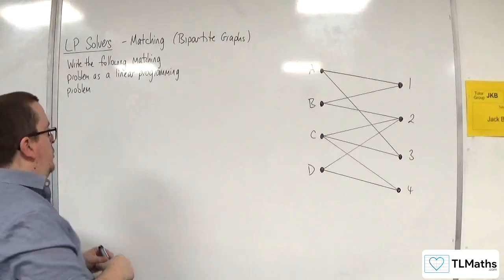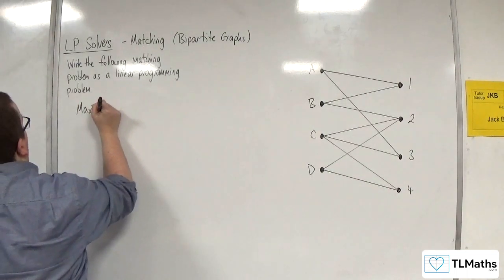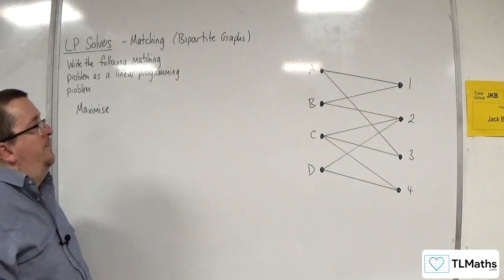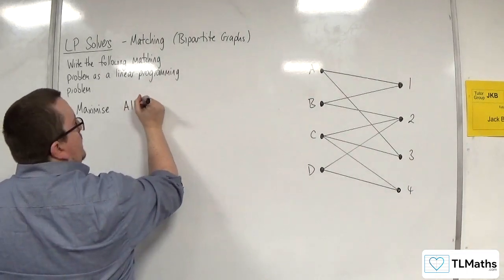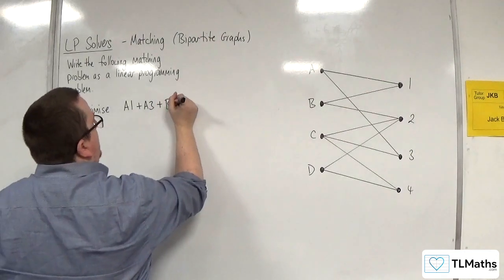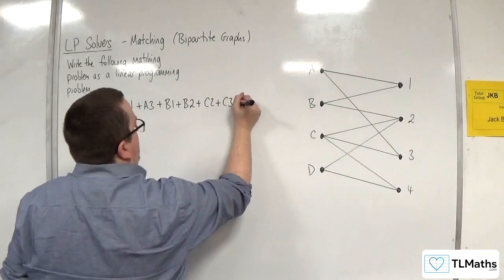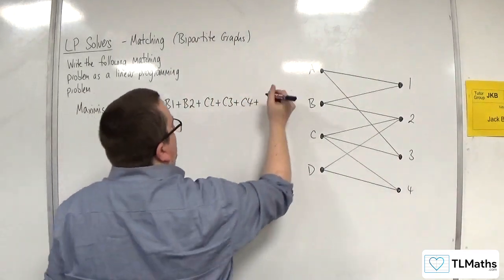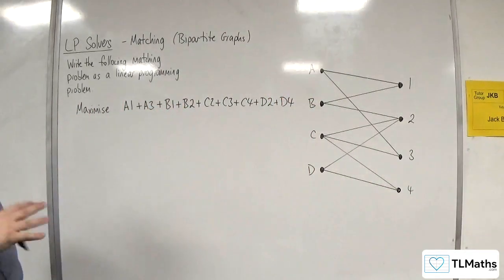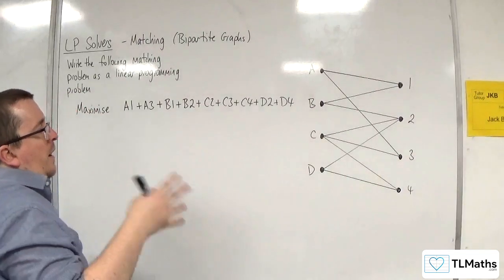Okay, so essentially what I want to do is, my objective function is to maximise the sum of all of the edges. So A1 plus A3 plus B1 plus B2 plus C2 plus C3 plus C4 plus D2 plus D4. So this is the sum of all of the edges.